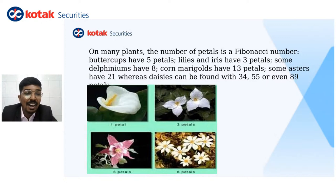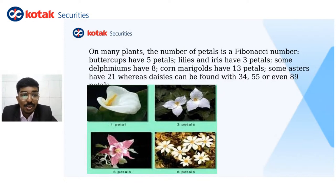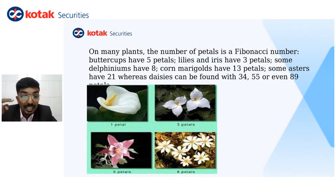If we look at many flowers around us, many of these plants have a recurring Fibonacci number. Buttercups have 5 petals, Lilies and Iris have 3 petals — 3 is a Fibonacci number, 5 is a Fibonacci number. Delphiniums have 8, Marigold have 13, which is again a Fibonacci number. Some people say it is coincidence, but there is certain logic and science to it — things in nature also occur in a certain pattern.